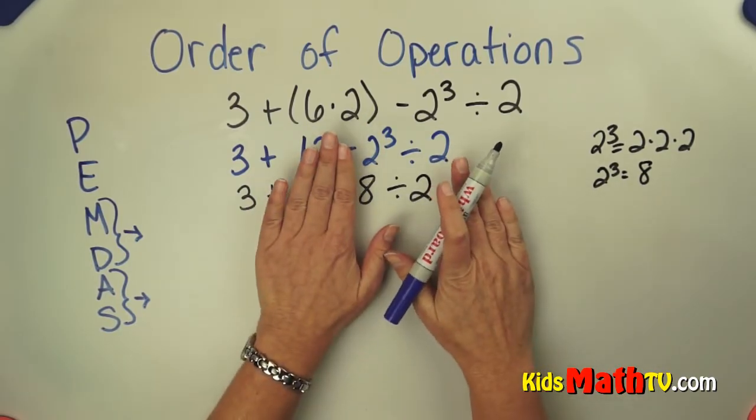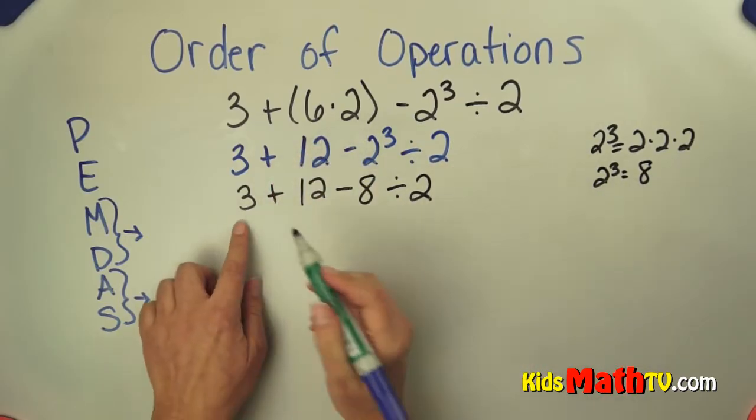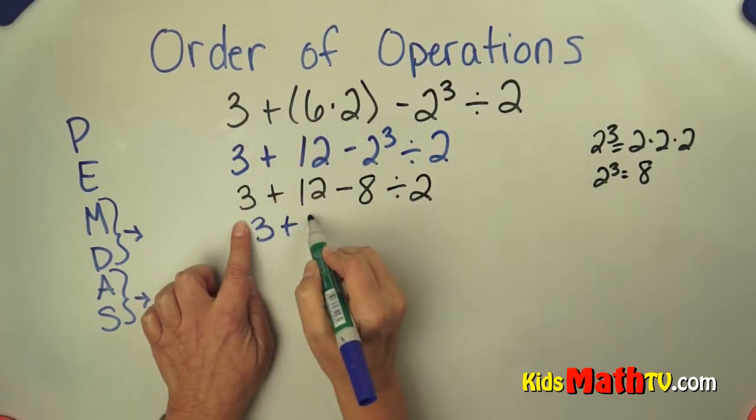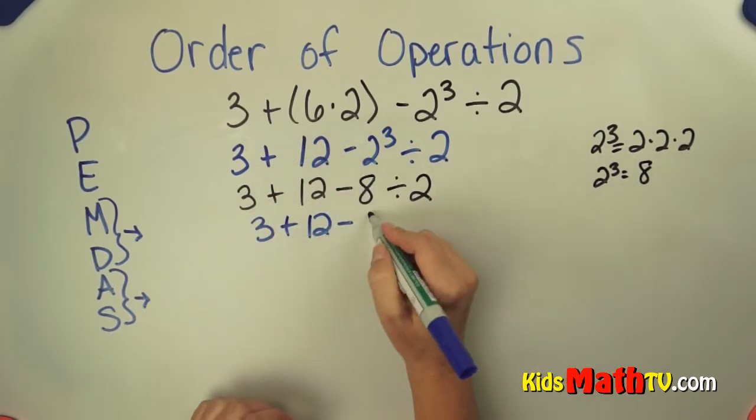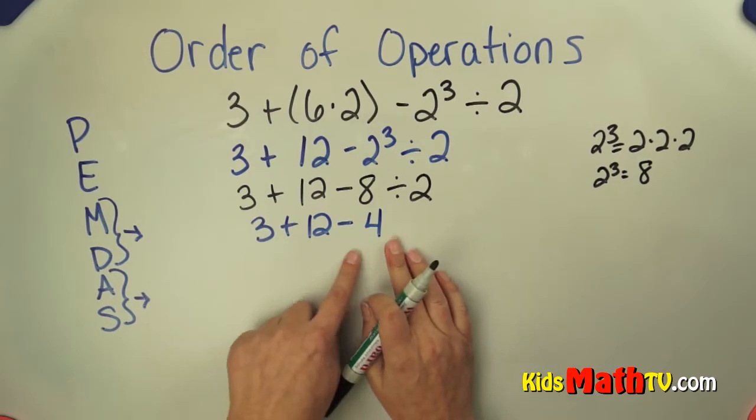The division is right here: 8 divided by 2. So I'm going to leave everything else - 3 plus 12 minus - and just do 8 divided by 2, which is 4. Is there any more multiplication or division? There is not.